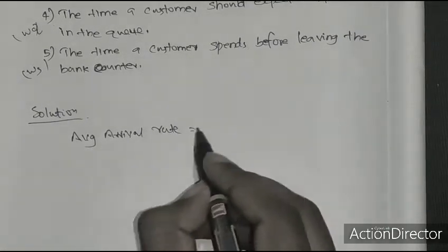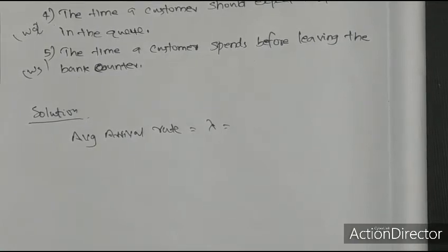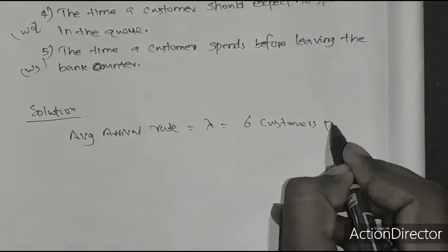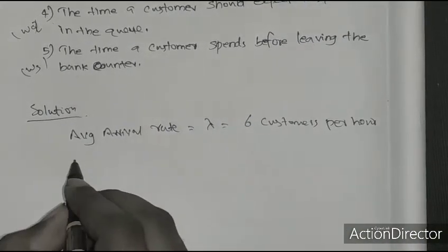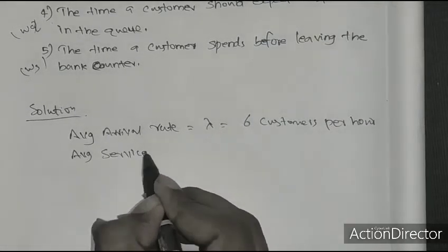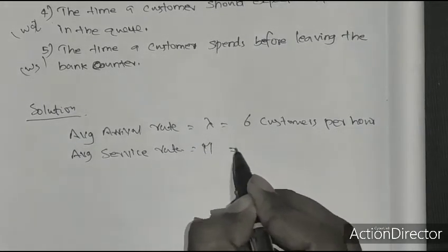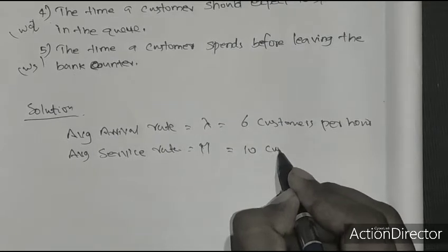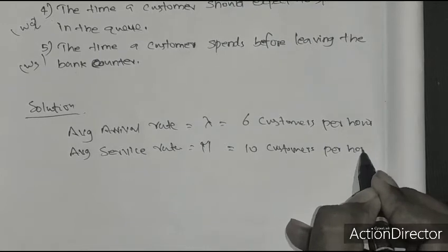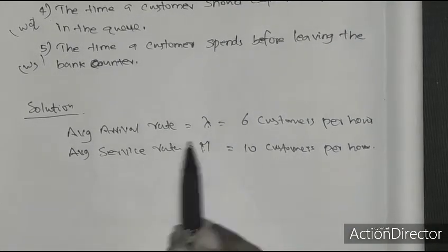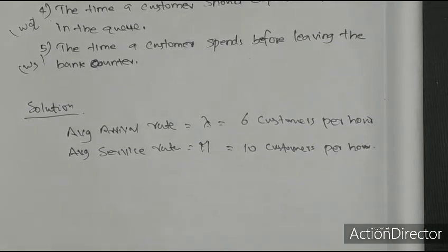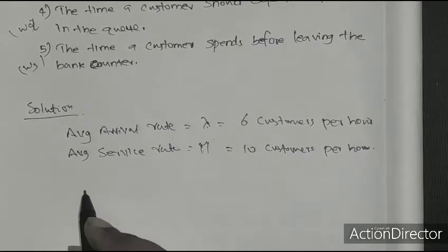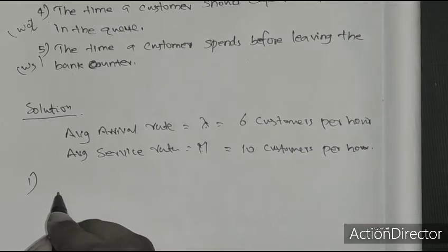The average arrival rate lambda equals 6 customers per hour. The average service rate mu equals 10 customers per hour. These are the two key parameters identified. Next, we apply the probability of n arrivals equation for the first question.